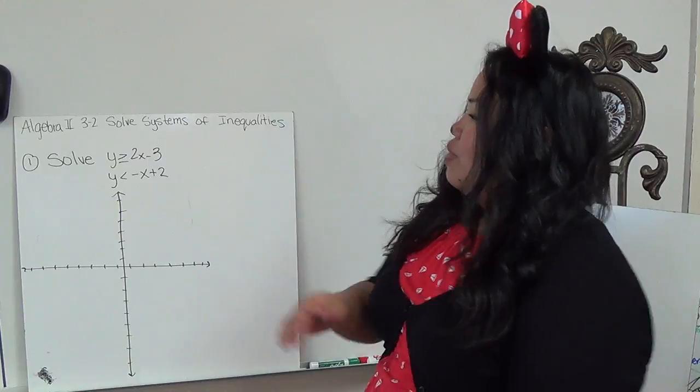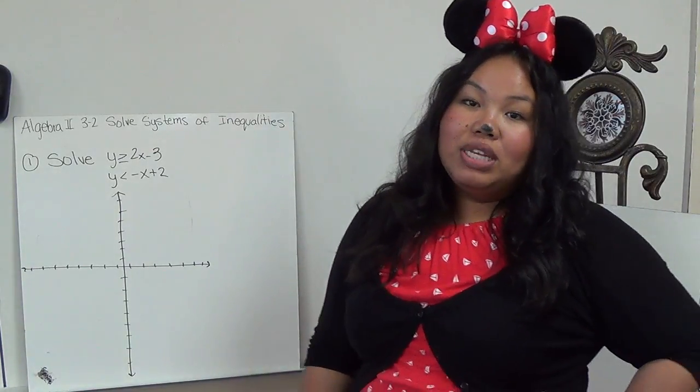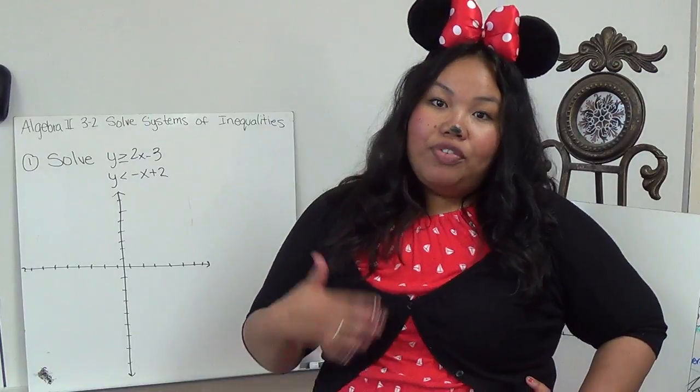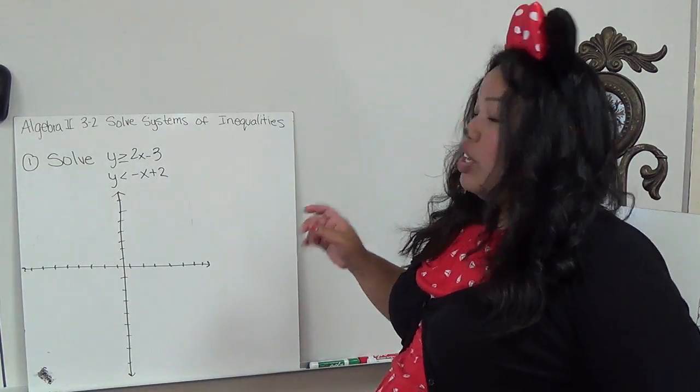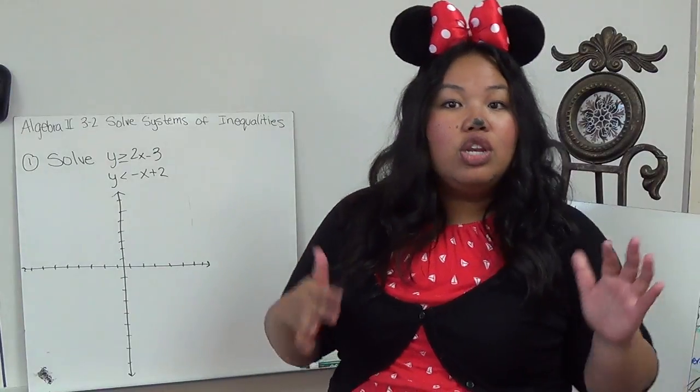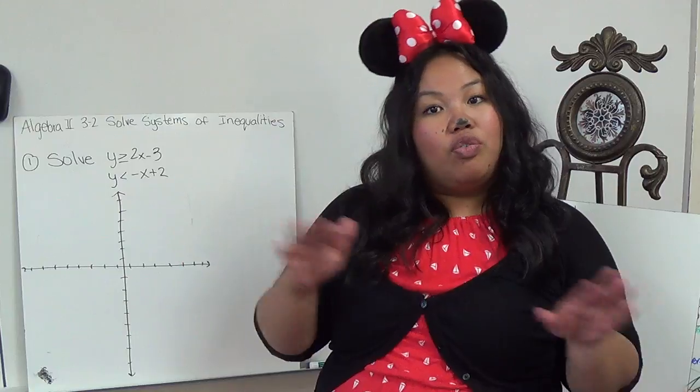But in Algebra 2, 3.2, we're dealing with solving systems of inequalities. So basically, we're graphing inequalities like we did before, but this time we're graphing two inequalities in one. So it's nothing new, it's just now we're going to see where both shades overlap.